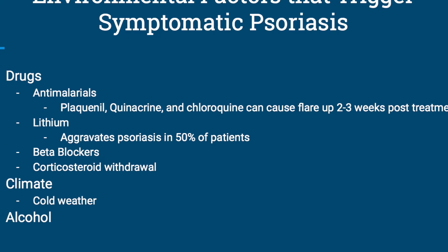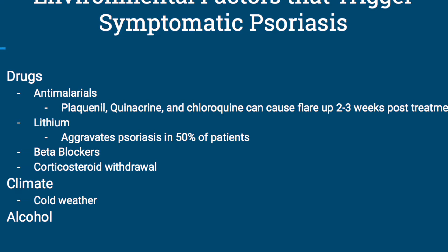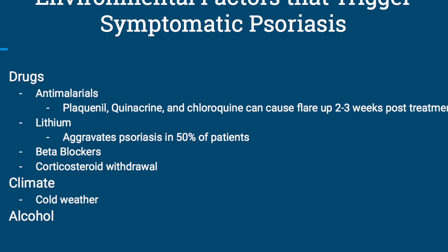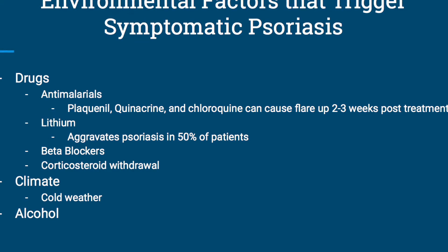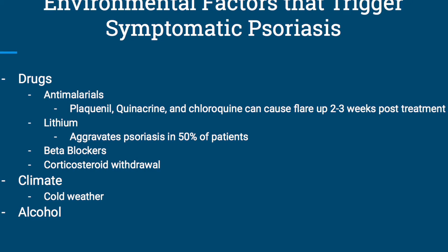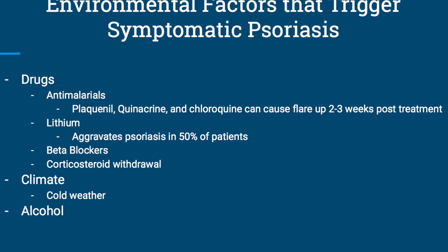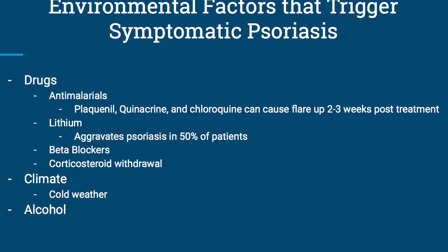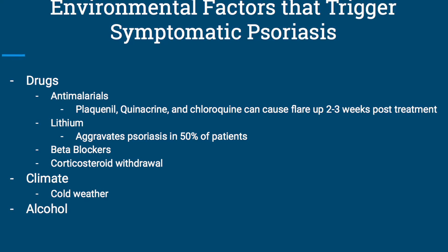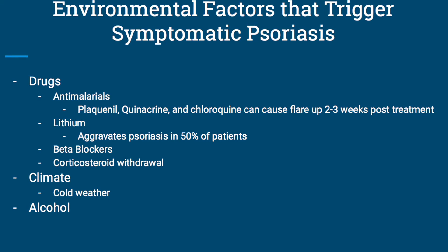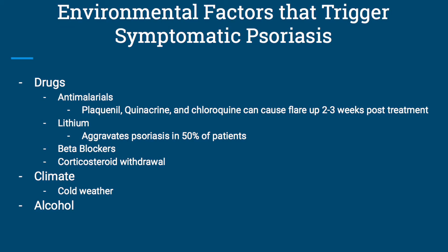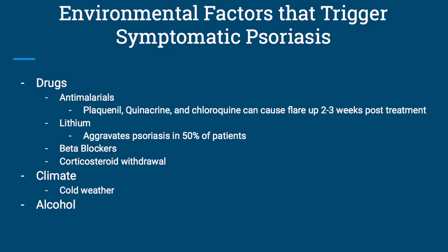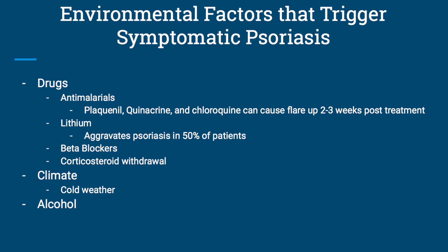Some additional environmental factors that can cause psoriatic flare-ups are drugs, including anti-malarials, which can cause flare-ups up to two to three weeks post-treatment, lithium, which aggravates psoriasis in 50% of patients, beta blockers, and corticosteroid withdrawal. Also, climate — people with psoriasis as a genetic predisposition tend to get outbreaks more frequently in cold weather. Alcohol use is also associated with increased outbreaks due to the stress on the immune system that it causes.